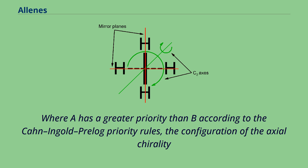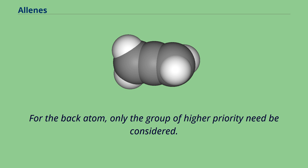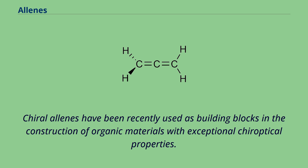Where A has a greater priority than B according to the Cahn-Ingold-Prelog priority rules, the configuration of the axial chirality can be determined by considering the substituents on the front atom followed by the back atom when viewed along the allene axis. For the back atom, only the group of higher priority need be considered.